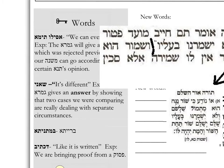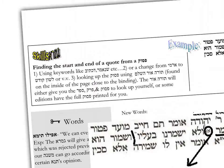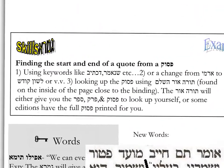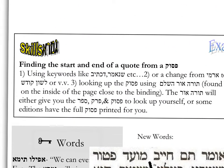Important skills like finding a quotation from a source — either from a Mishnah or from a Pasuk — using words like Shenemar, Dixiv, Tznan, and Tanya.